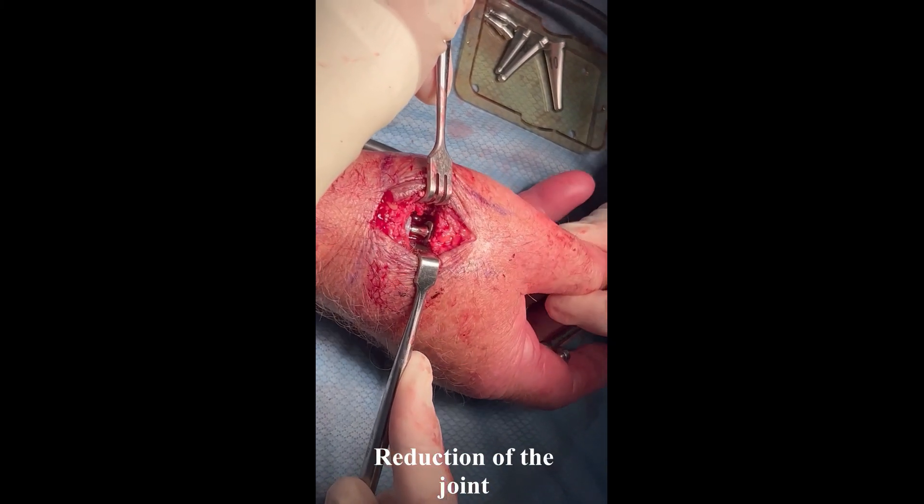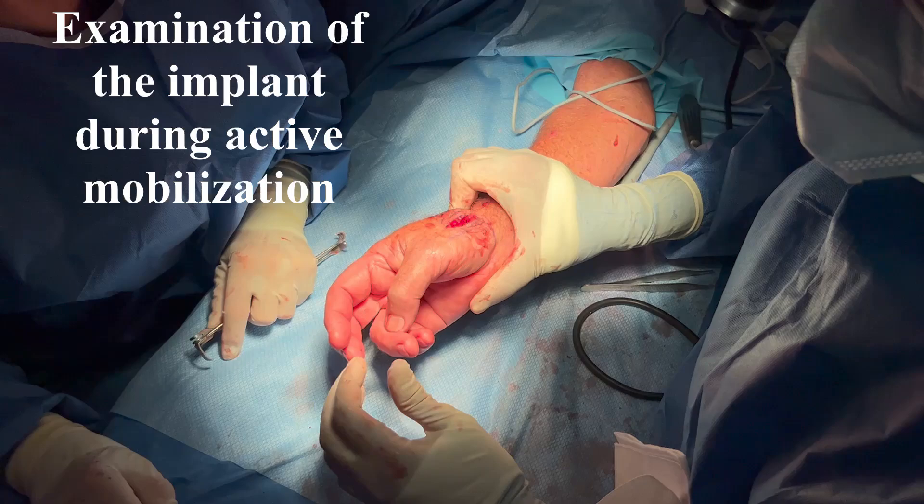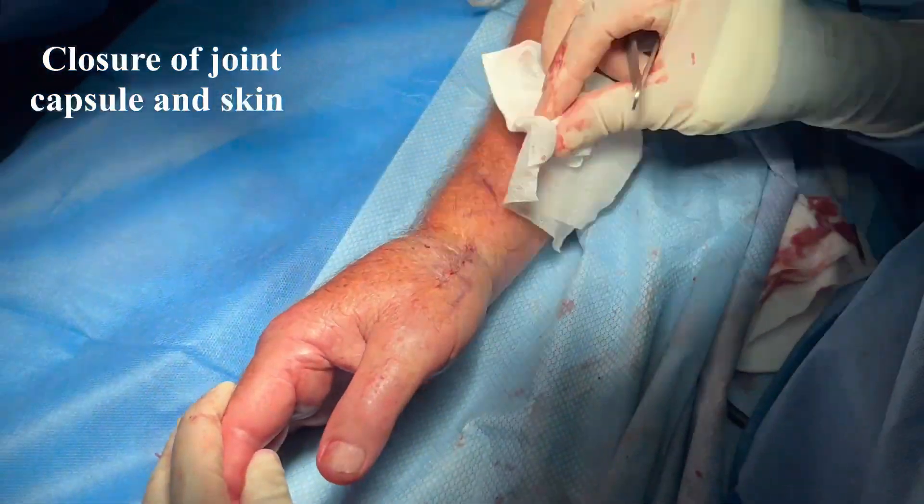Passive and active mobilization are critical to assess for stability and impingement. The joint capsule and the skin are closed.